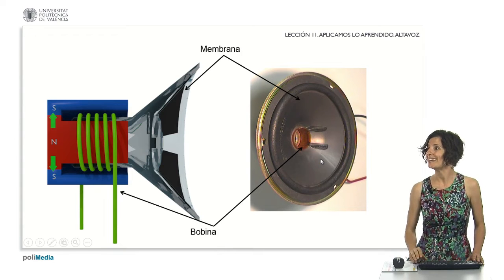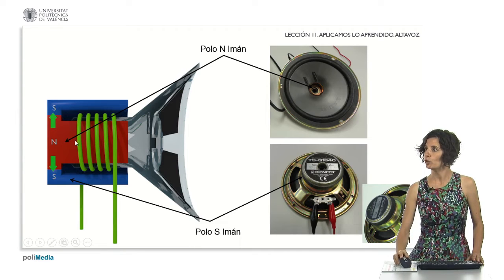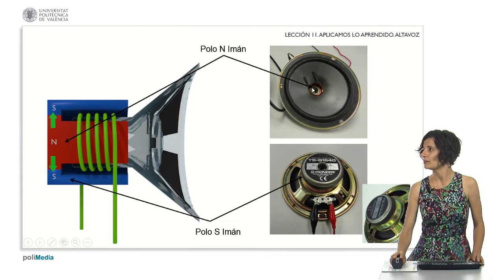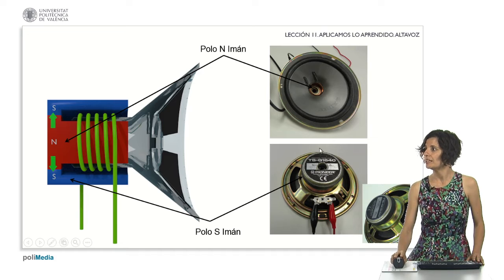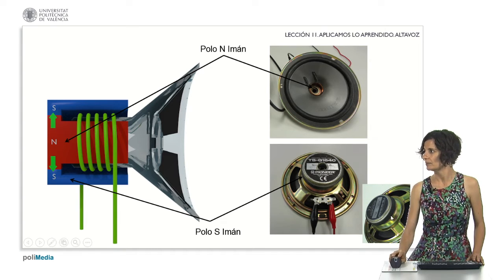To examine the details of the permanent magnet, we have these two photographs. In this photo, the central part reveals the north pole, the yellow area. And the south pole, if we flip the speaker over, is this part right here. You can see it there as well.